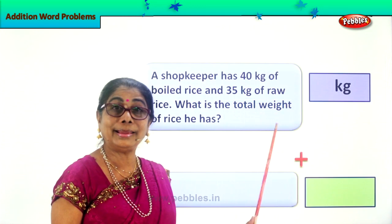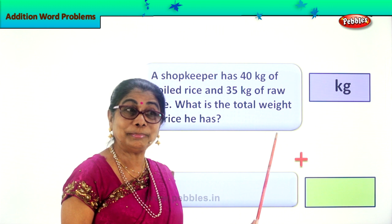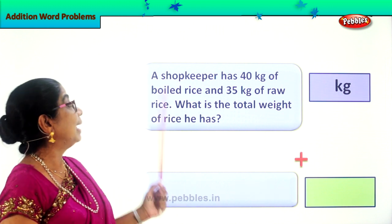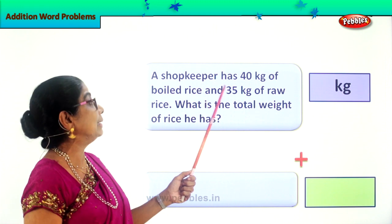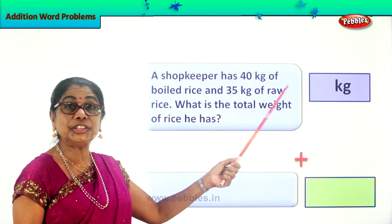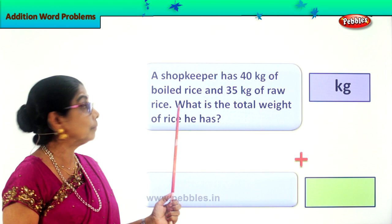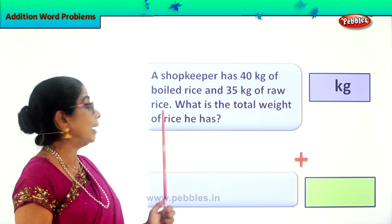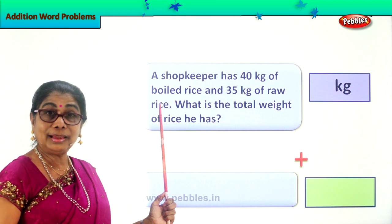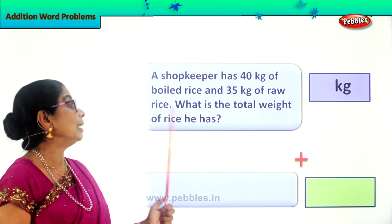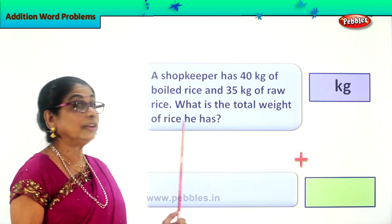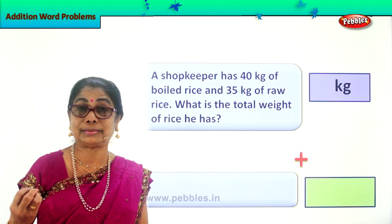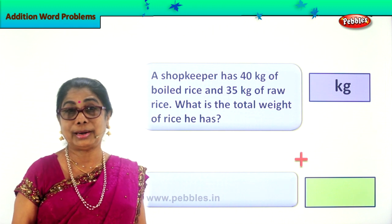Let's look at our first problem. Let's read together. A shopkeeper has 40 kg of boiled rice and 35 kg of raw rice. Have you seen two types of rice? Yes. What is the total weight of rice he has? So we are going to find out the total weight of the rice — raw rice, boiled rice.